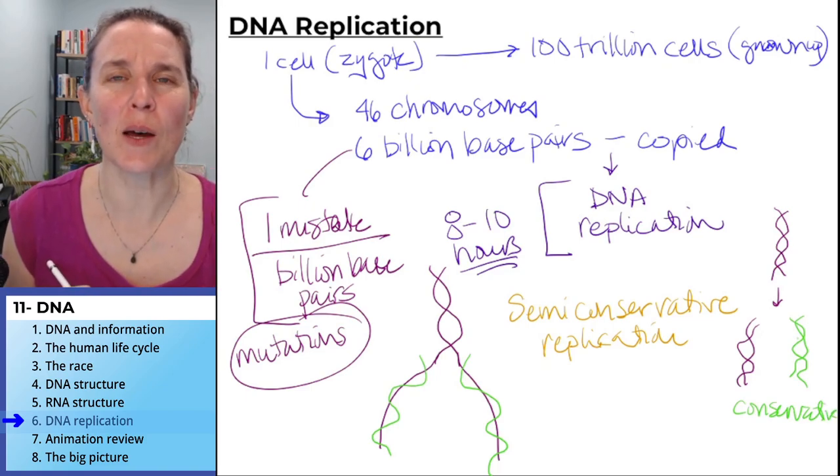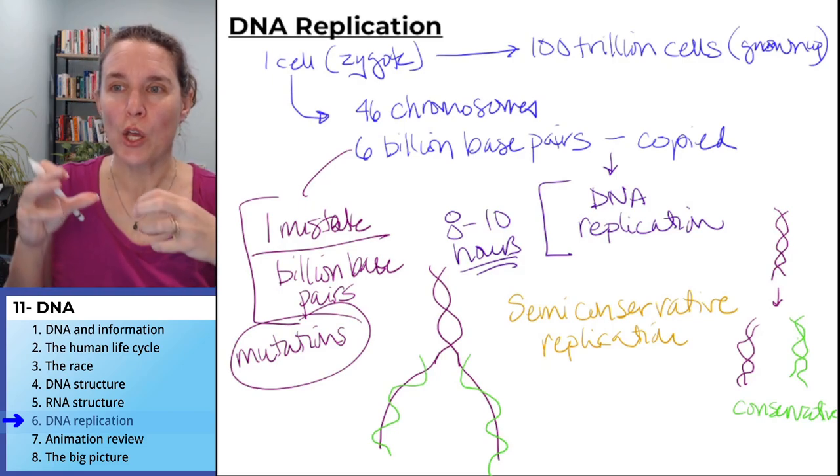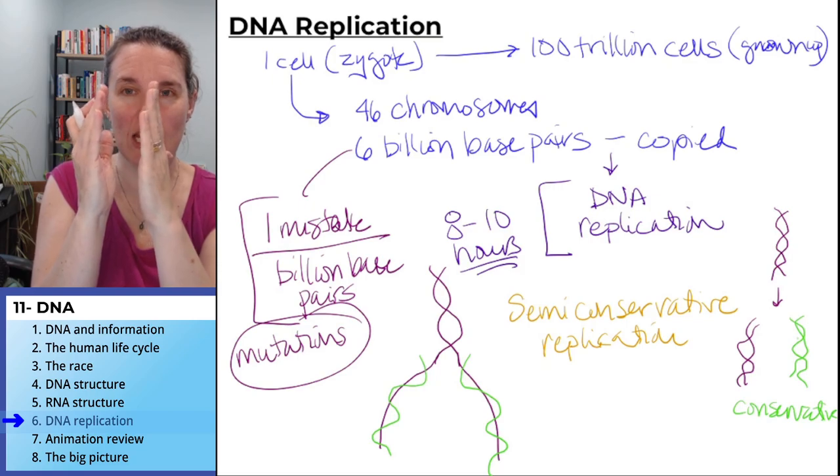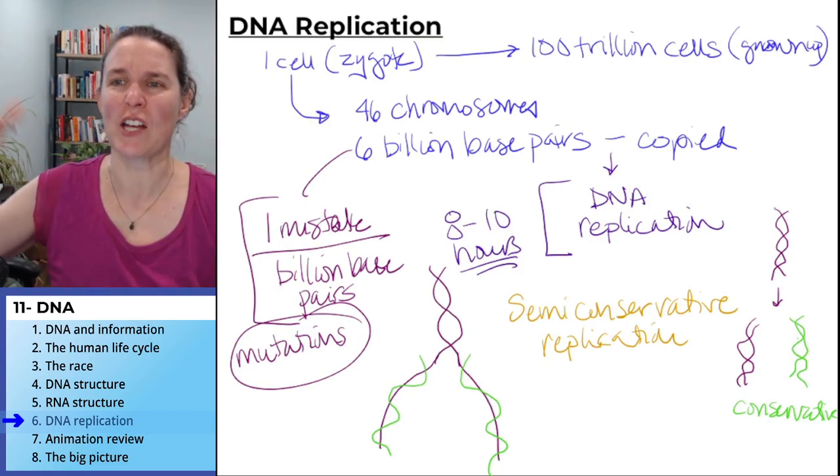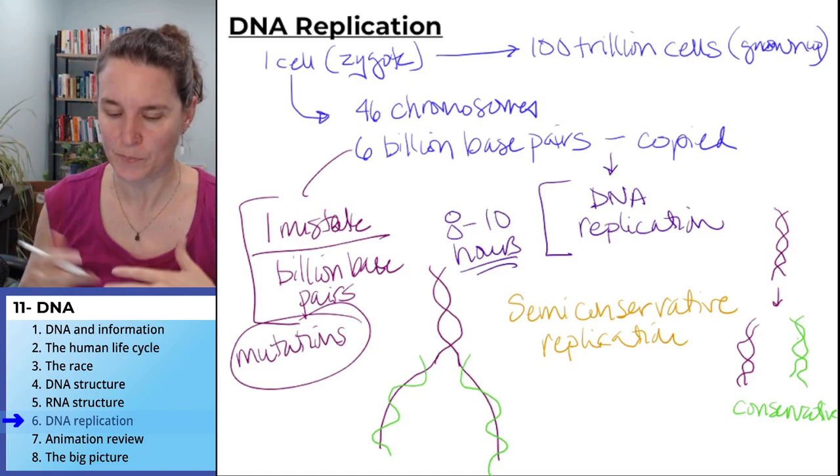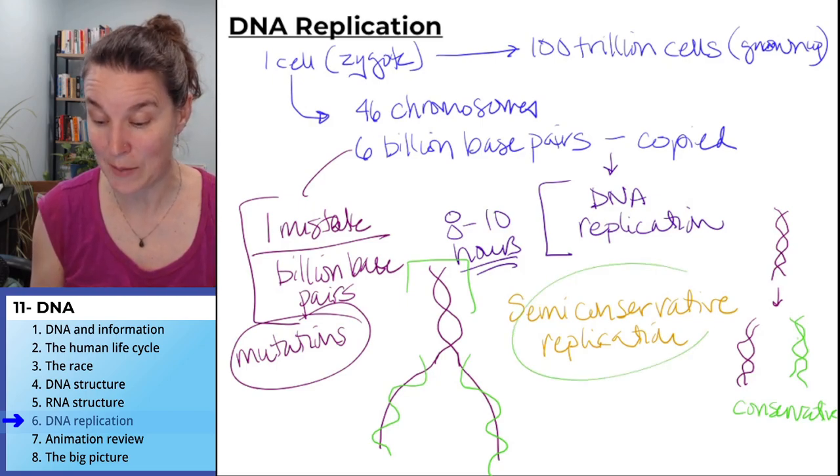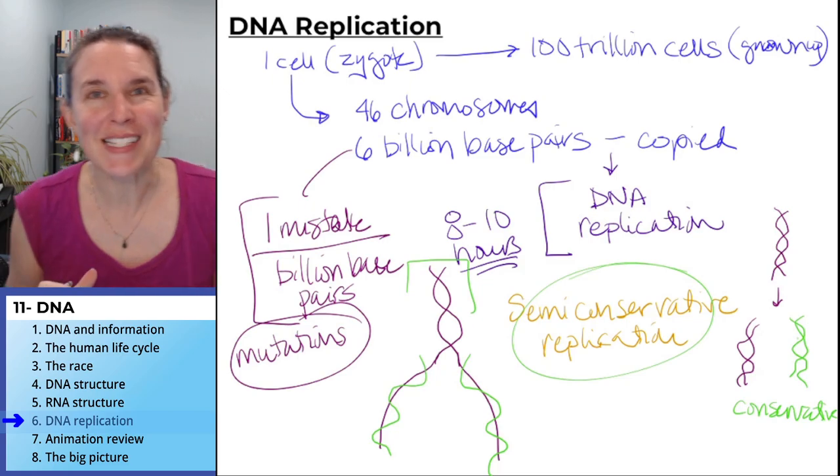And then there's a proposal of dispersive replication where you basically took one strand of DNA and your two resulting strands were like a mishmash of new DNA and old DNA. Not the case. What they figured out is that it actually is semi-conservative replication and you end up, it makes sense, right?